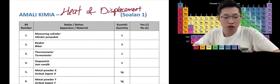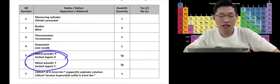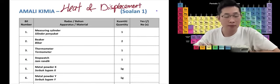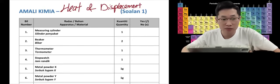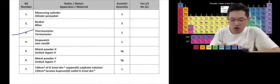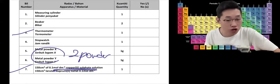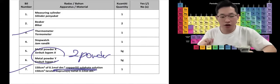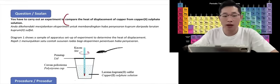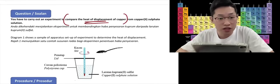The difference between question one and question two is that in question one you have been given unknown powder X and Y, or A and B maybe, but the other set already tells you that the metal powder is zinc and magnesium. When you look at your paper, make sure this experiment is about heat of displacement. How can you tell? There will be a thermometer, two different types of powder, and one copper-2-sulfate solution. Read the question — they will always say you have to carry out an experiment to compare the heat of displacement of copper. So now I'm sure this experiment is about heat of displacement.